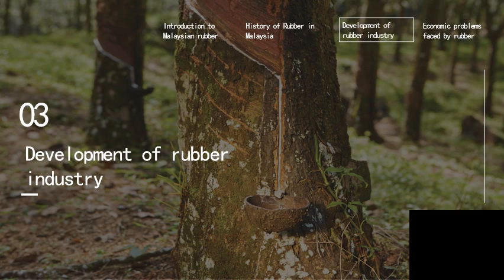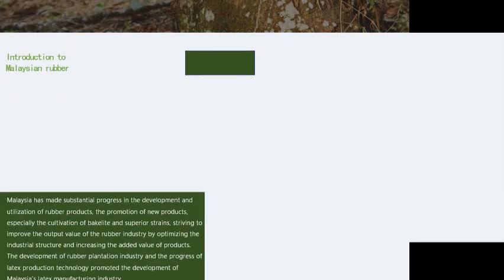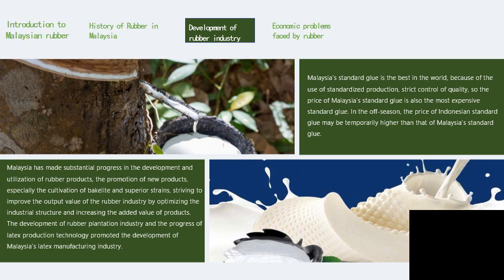Now let's go to chapter 3, the development of the rubber industry. As you can see in this picture, Malaysia's standard rubber goods are the best in the world because of the use of standardized production and strict quality control. So the price of Malaysia's standard goods is also the most expensive among standard rubber goods in the world.